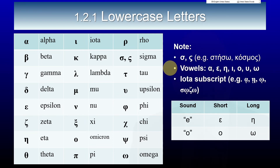Now, like English, Greek distinguishes between consonants and vowels. The English vowels are a, e, i, o, and u — five. Greek has seven vowels, because it has both a short e sound and a long e sound, and a short o sound and a long o sound. This table here shows that the short e sound is an epsilon and the long e sound is an eta. It also shows the short o sound is an omicron and the long o sound is an omega. So there are seven Greek vowels.